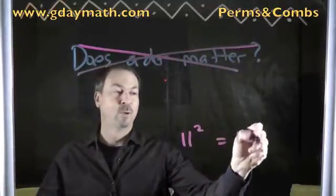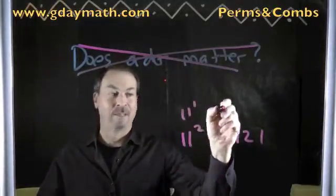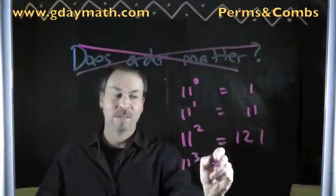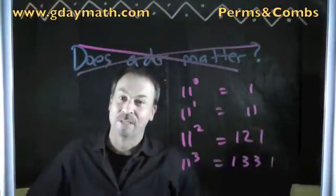11 squared is 121. 11 to the 1st power, that's much easier, is just 11. 11 to the 0th power is just 1. 11 cubed is 1, 3, 3, 1 it turns out to be.